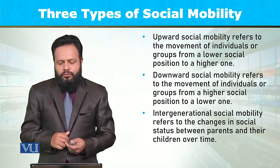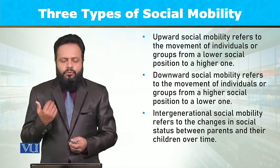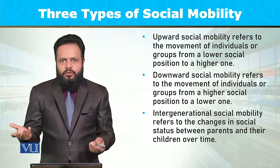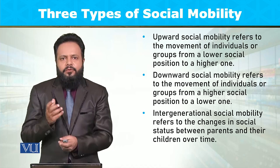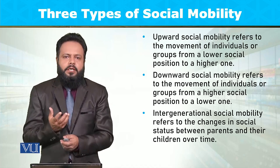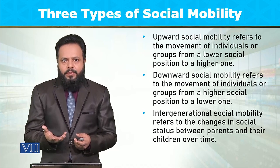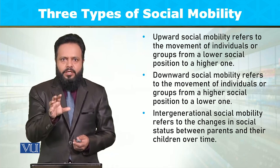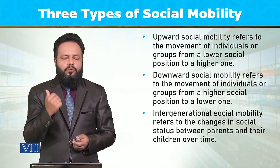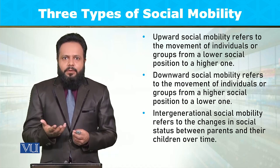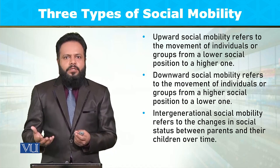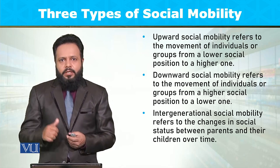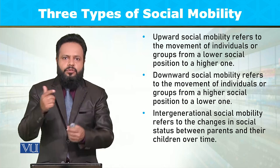Then we have intergenerational social mobility, which refers to the changes in social status between parents and their children over time. اس میں یہ دیکھا جاتا ہے کہ بچہ جن ماں باپ کے گھر میں پیدا ہوا ہے ان کی hierarchical position، social status اور stratification میں position کیا تھی۔ For example، اگر financially stable parents کے بچے اپنی اس position کو maintain نہیں رکھ پاتے تو اس کا مطلب ہے کہ intergenerational social mobility downward ہوئی ہے۔